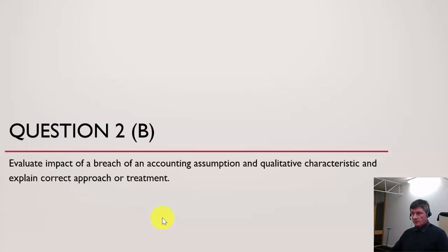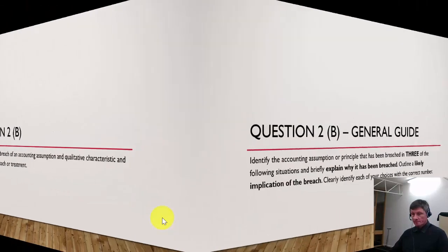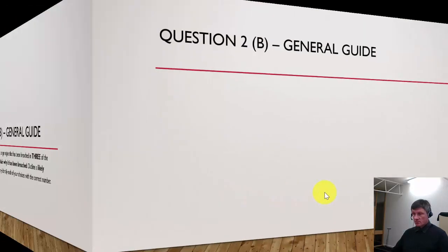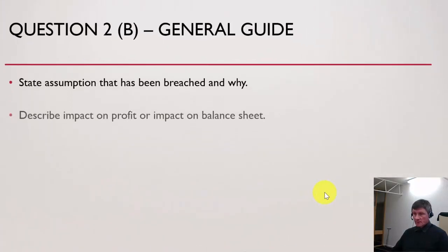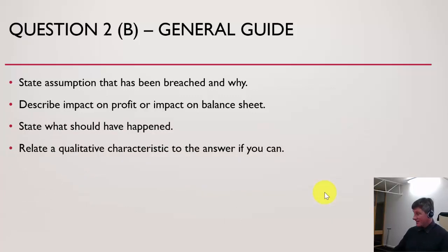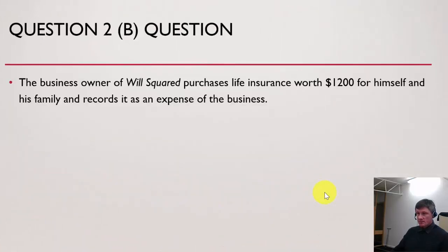In question 2B, you are given a range of case studies and you have to say what's wrong, what should happen, and why. You should state why the assumption is breached, the likely implication of that breach — for example, if it impacts profit, valuation, or business operation — and then state what should have been done correctly. State the assumption, describe the impact, and state what should have happened. If possible, relate a qualitative characteristic to the answer even if it talks about an assumption.